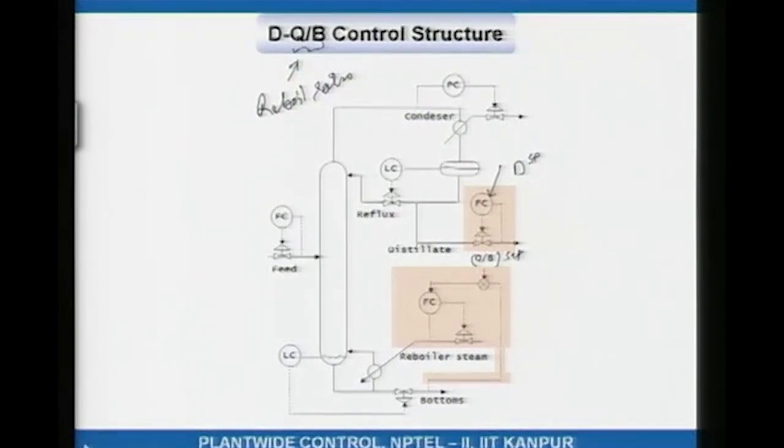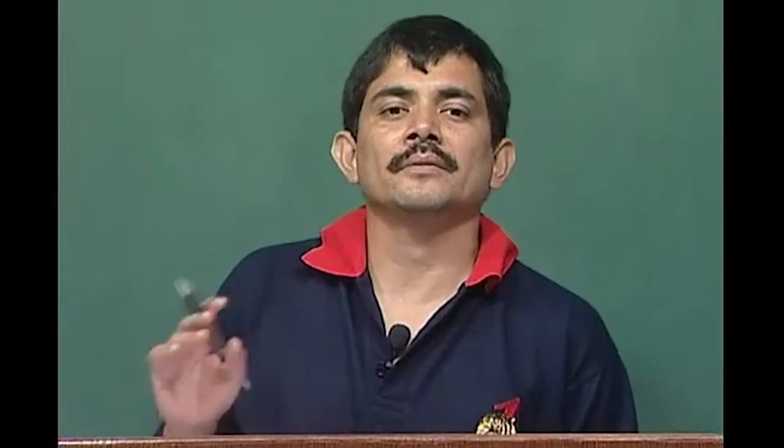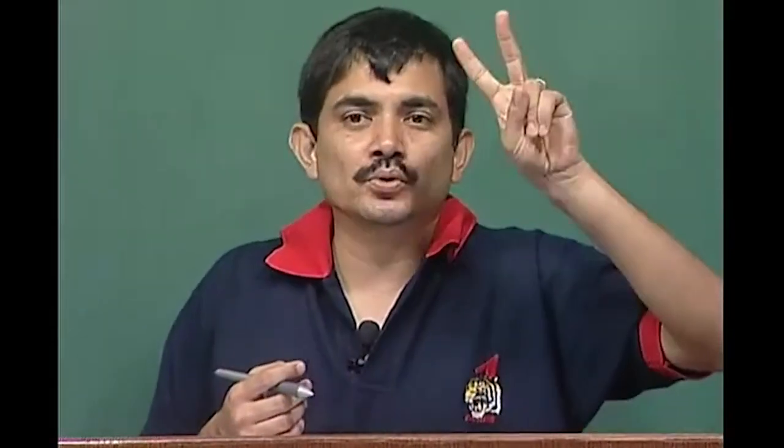That is a good place to stop. Next lecture we will talk about temperature inferential control of distillation columns — in all these structures the operator adjusts two variables to get the desired separation. Can we free the operator by doing this automatically so that quality is always controlled regardless of disturbances? Those control structures for automatic quality control are what we will take up next time.